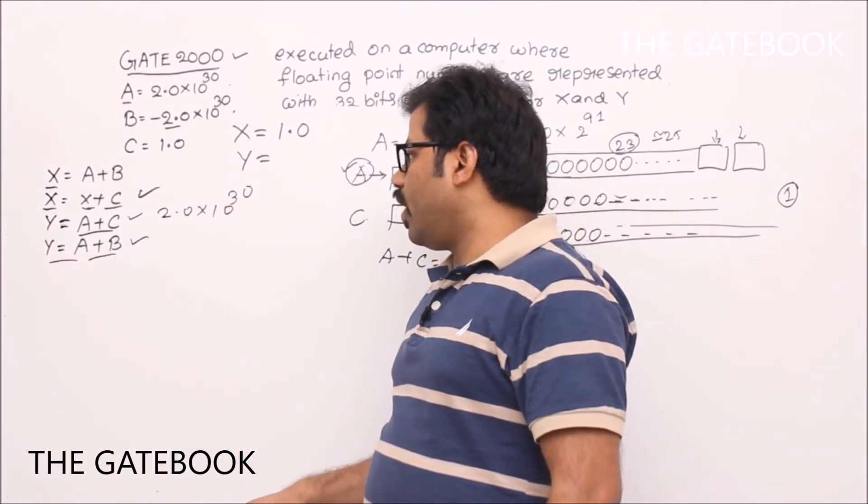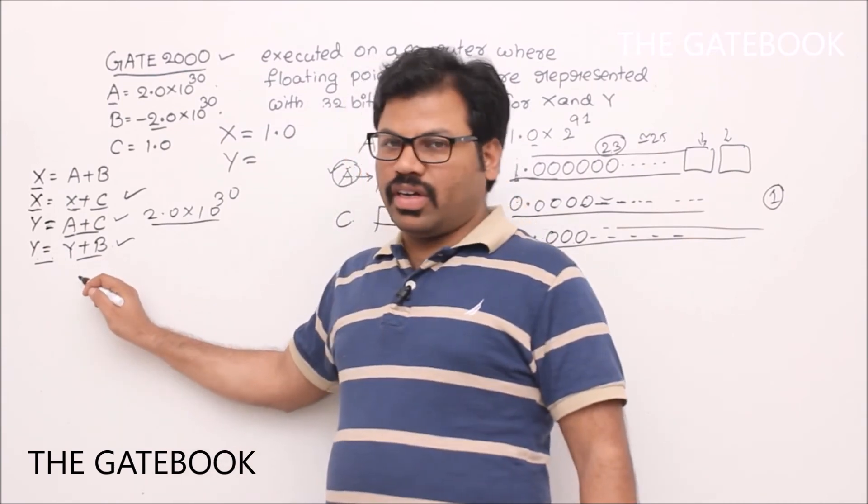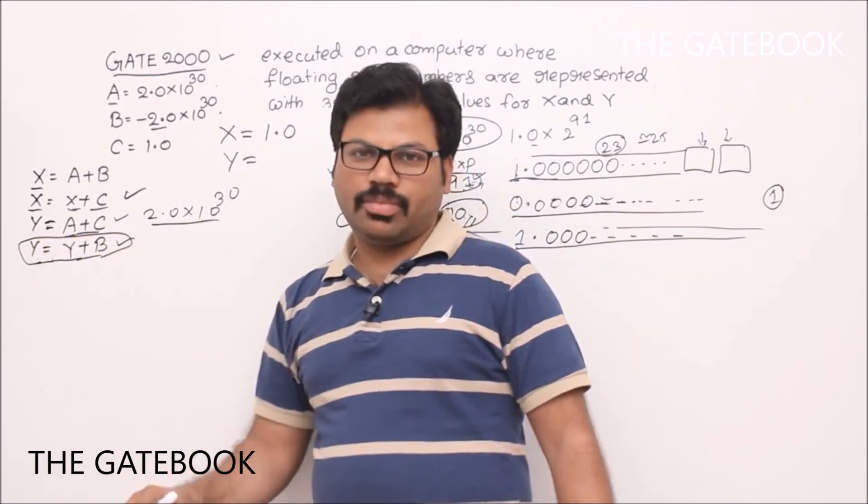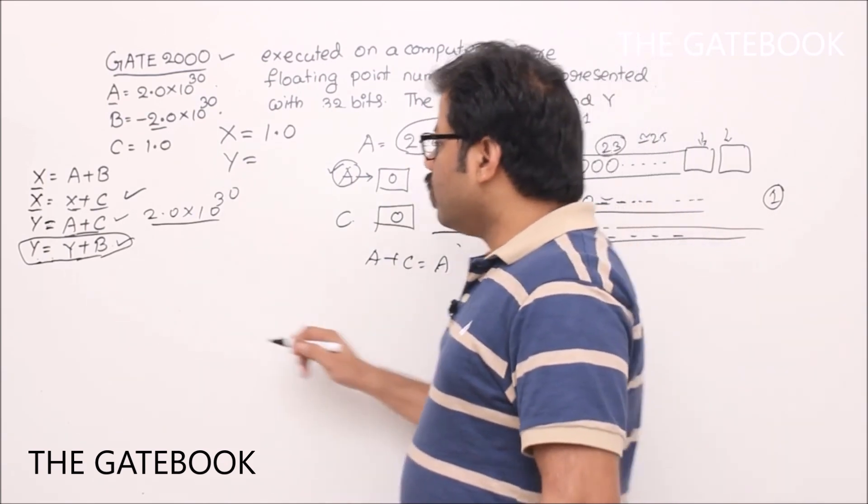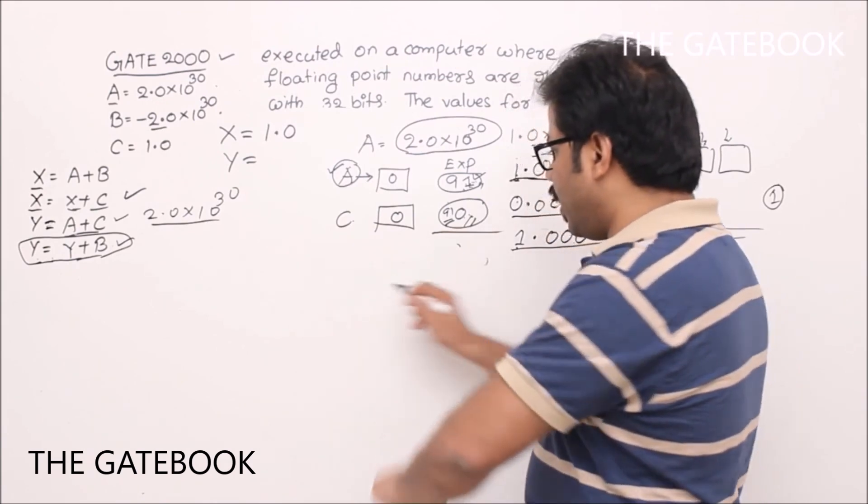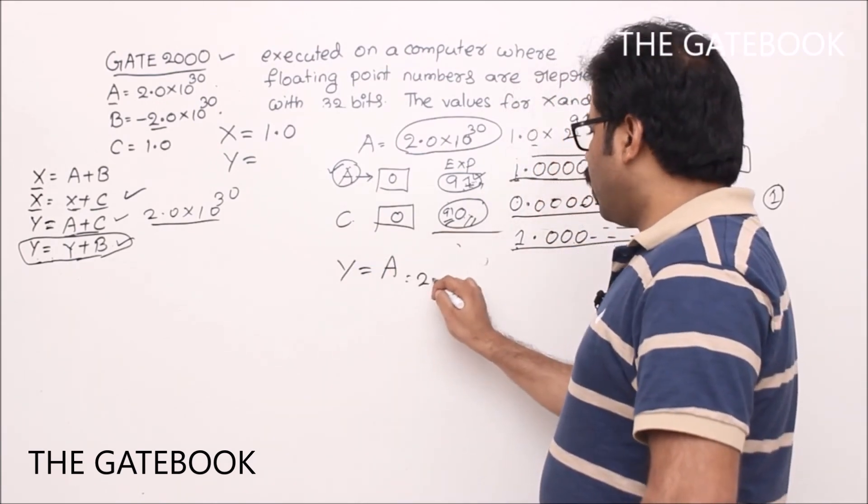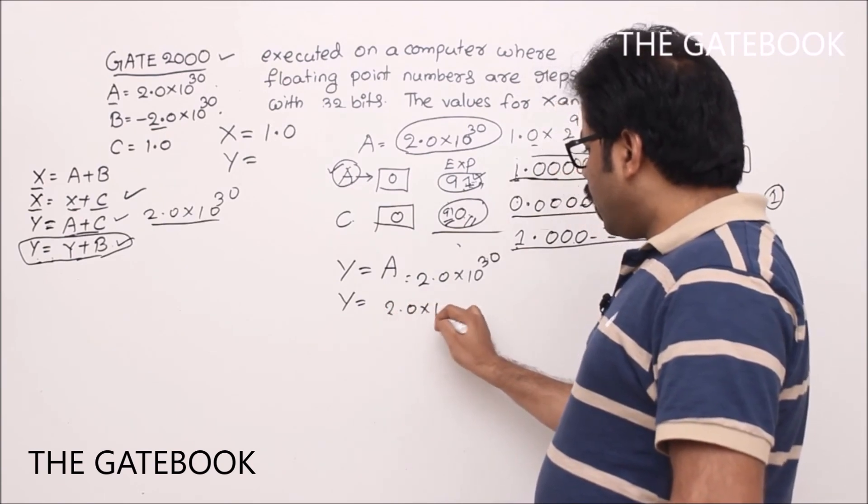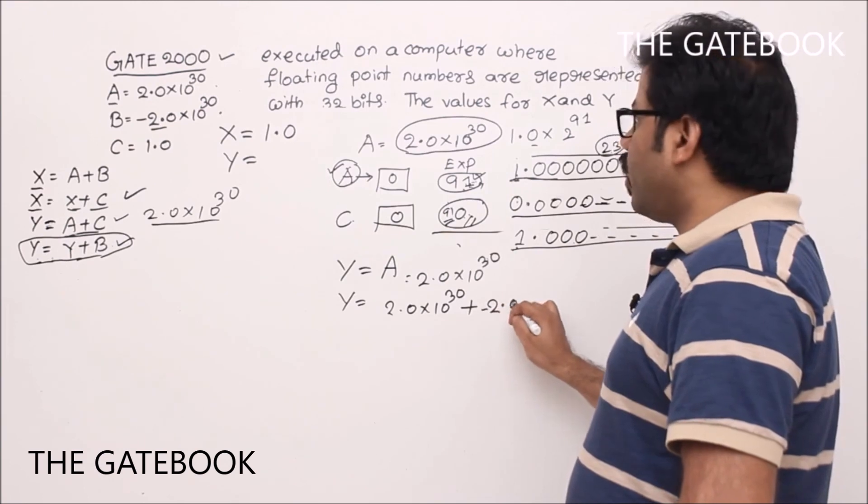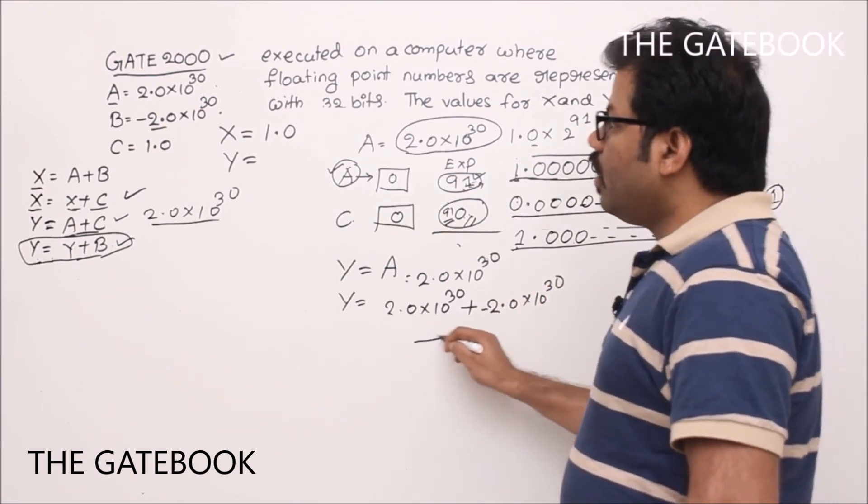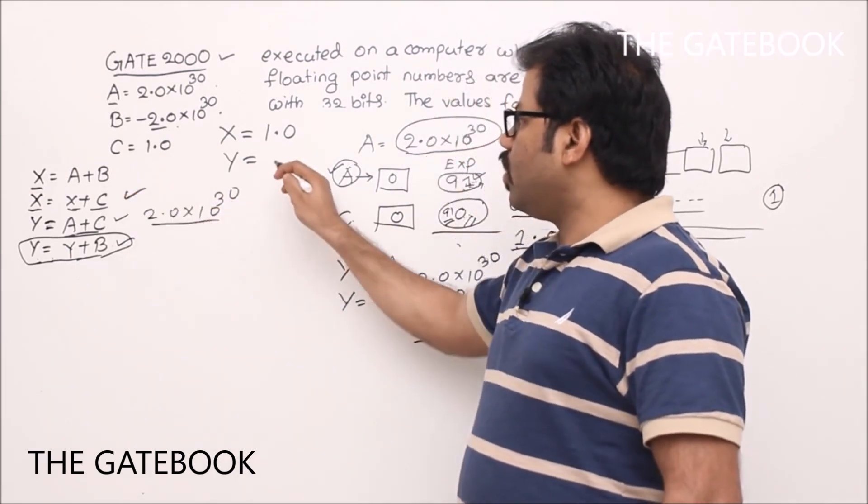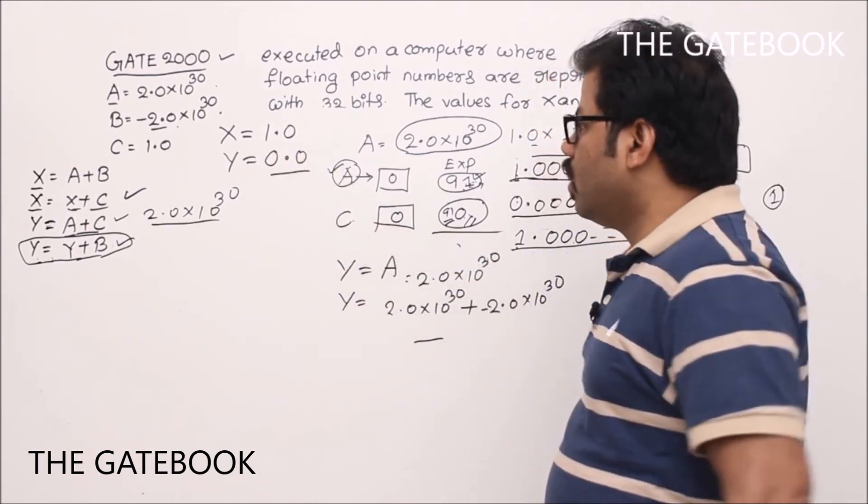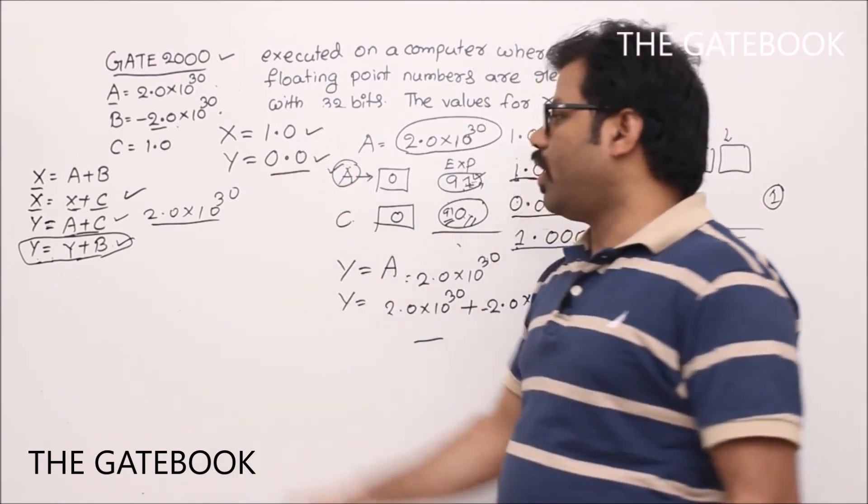So, Y is now A, correct? What is A? 2.0 into 10 power 30. Now, we are doing Y plus B. Y equal to Y plus B. So, actually here, Y is Y plus B. I wrote A plus B, correct? It is wrong. So, please correct it. So, in the question, actually it is given as Y equal to Y plus B. Let us take that and we solve the remaining problem. So, Y is what now? Already, we know that Y's content is A plus C, which is A, right? We got so far Y equal to A, which is nothing but 2.0 into 10 power 30. Now, we will be doing Y equal to Y plus B. That means, 2.0 into 10 power 30 plus B. B is what? Minus 2.0 into 10 power 30. Recall. When we did A plus B first time, we got 0, right? Same thing you are going to get now, correct? So, it would be 0. Here you get 0. So, finally, X is 1.0, Y is 0.0 is the answer, okay?